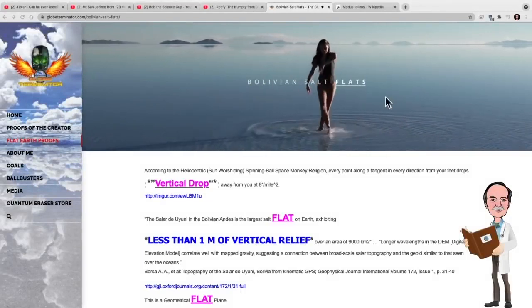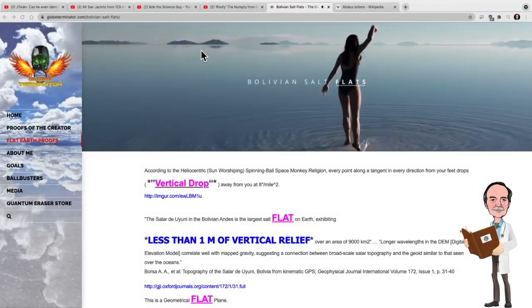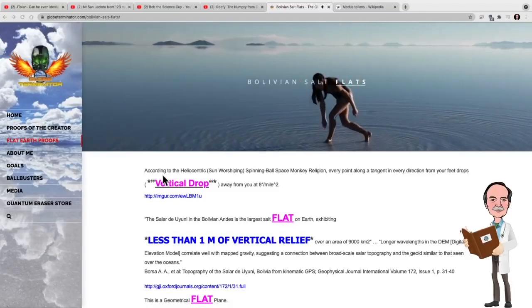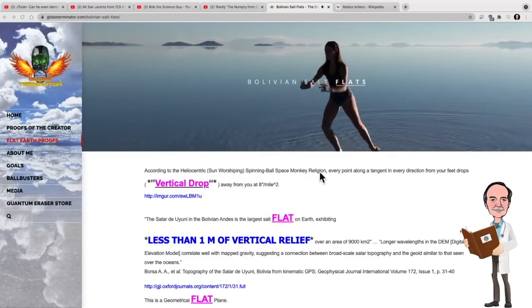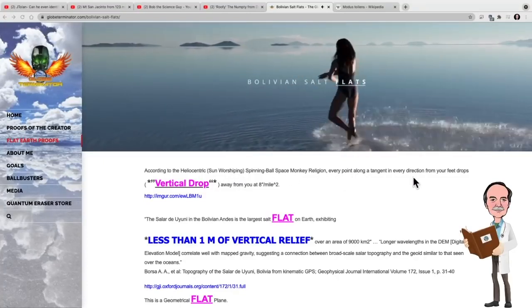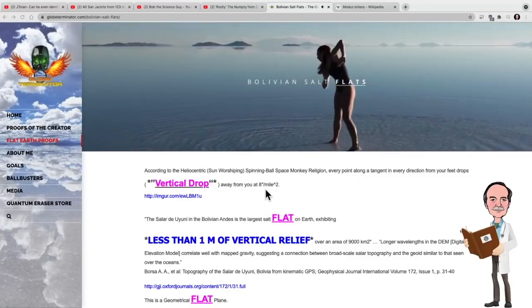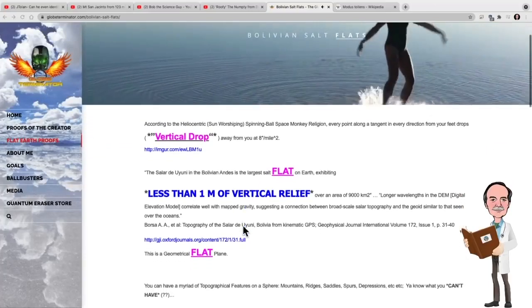So let's have a look here at the Bolivian salt flats. We've got a nice lady dancing in a puddle on this salt flat. Now, according to Quantum Eraser, it says here, according to the heliocentric sun-worshipping spinning ball space monkey religion, every point along a tangent in every direction from your feet drops away from you at eight inches per mile squared.